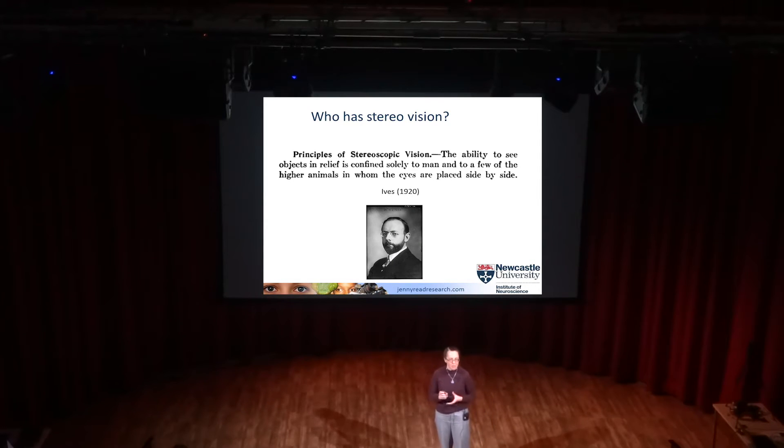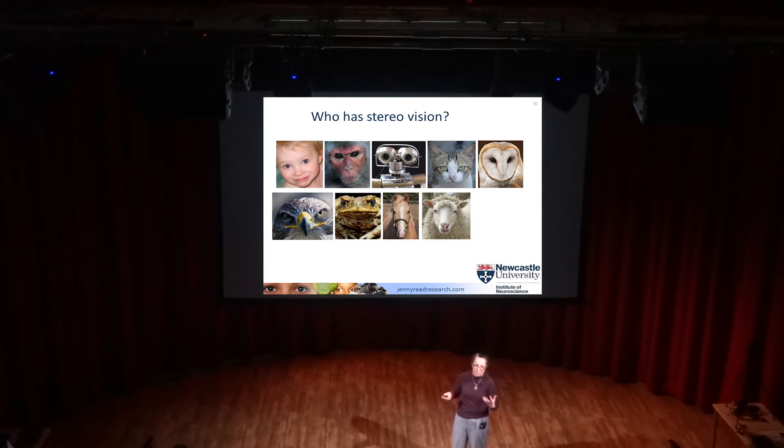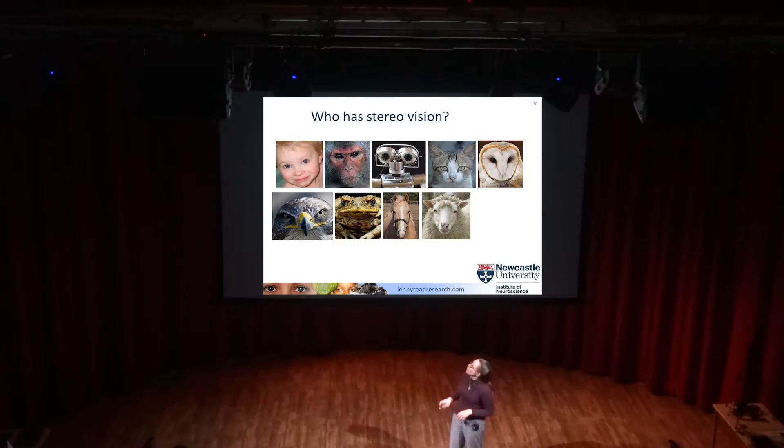Who has 3D vision? A hundred years ago the answer seemed clear - it was obviously a complicated ability only higher animals such as man could have. But we now know that's completely wrong. We've discovered 3D vision in all sorts of organisms: humans and primate relatives, other mammalian predators like cats, bird predators like owls and falcons, amphibian predators like toads, and surprisingly also in prey animals - horses and sheep do have 3D vision. And perhaps most surprisingly, even some insects have 3D vision. This praying mantis, for instance.